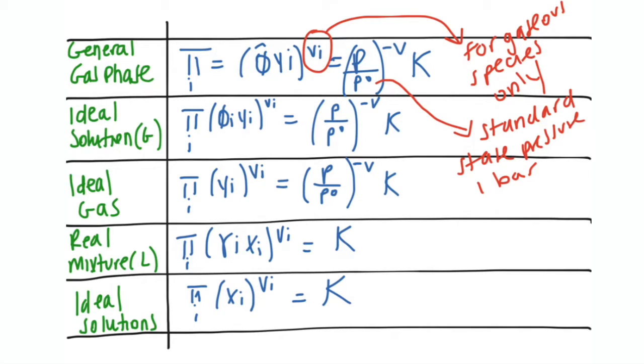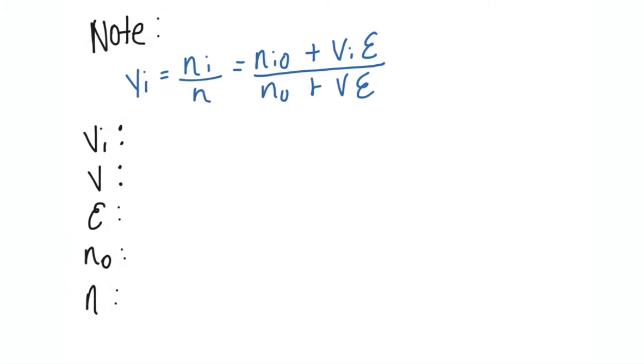So the first one is the general gas phase, and then under that I've written ideal solution, gaseous, ideal gas, real mixture liquid, and ideal solutions on the bottom. But really you're going to be usually dealing with the gaseous ones - the first three that I've written, or maybe the fourth. But yeah, the gas ones are more common that we see those.